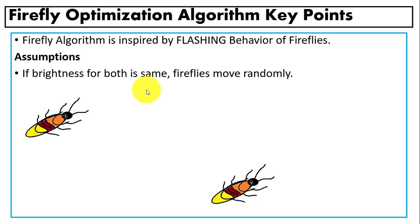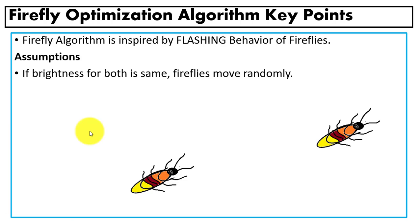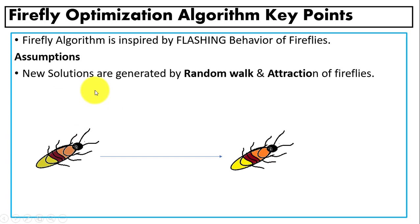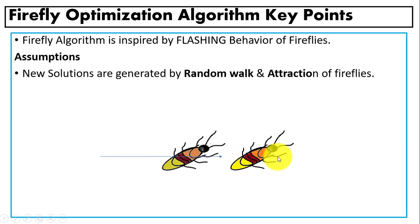The third assumption is that if the brightness for both fireflies is the same, then the firefly moves randomly — we will use a random walk for that. The fourth assumption is that new solutions are generated by the random walk and the attraction of the firefly. A less bright firefly is attracted toward the brighter one, and new solutions are generated according to the brightness or light intensity value.